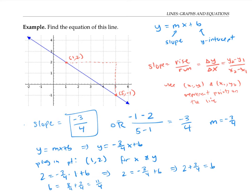So now I can write out my final equation for my line y equals negative three fourths x plus 11 fourths by plugging in for m and b.